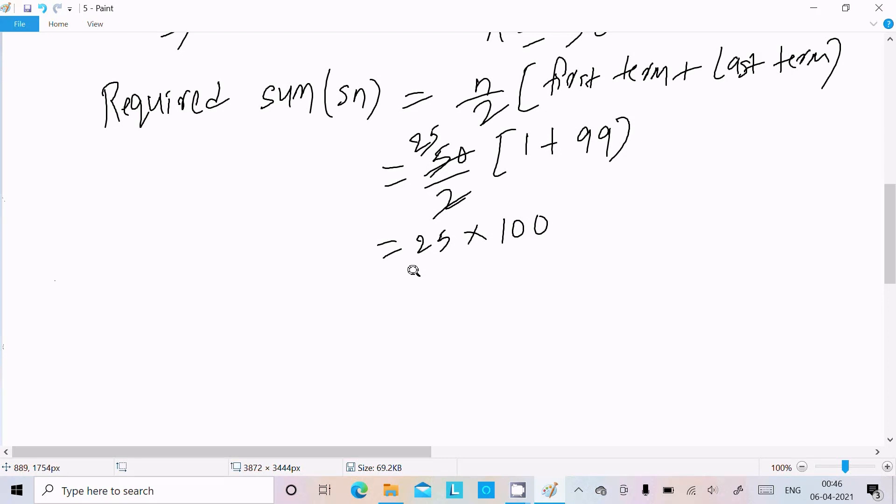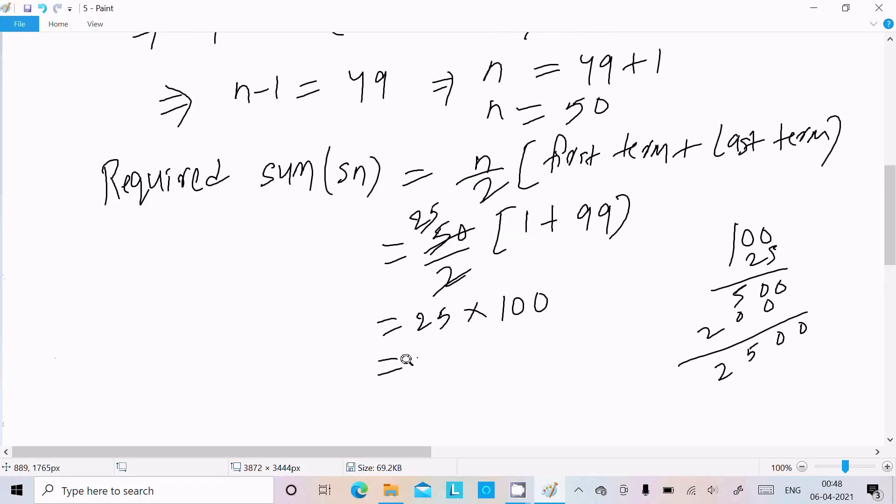So 25 times 100: this equals 2500. 25 × 100 = 2500, which is the answer.